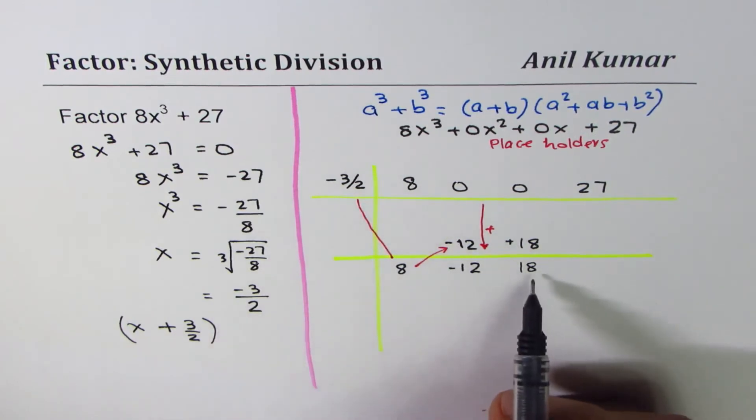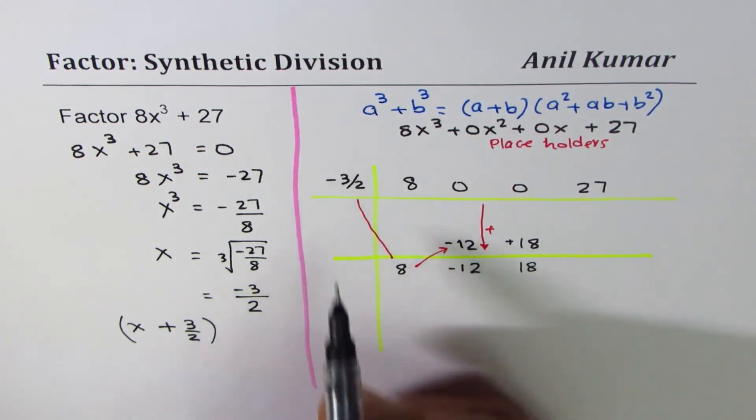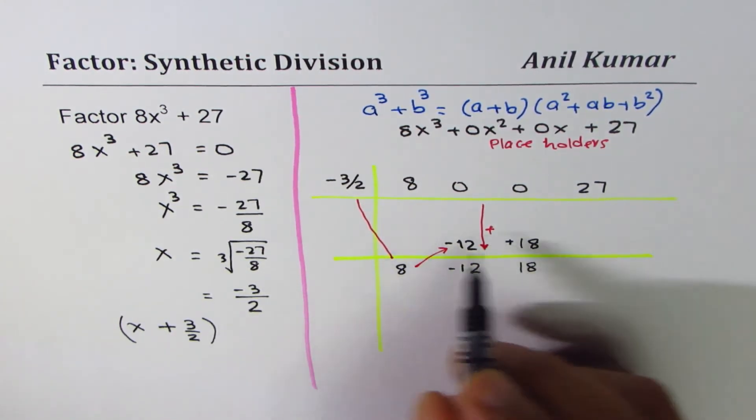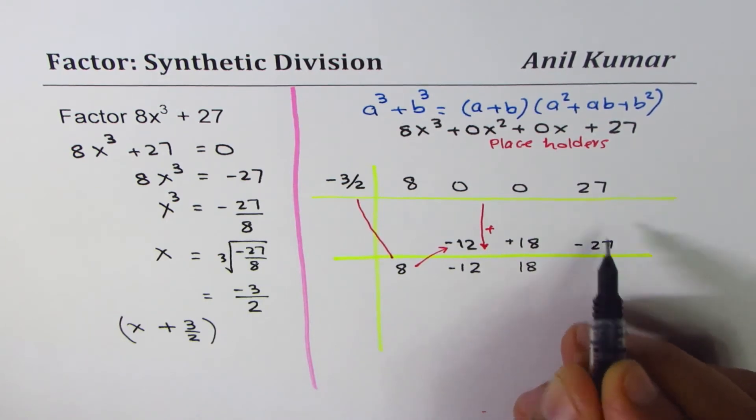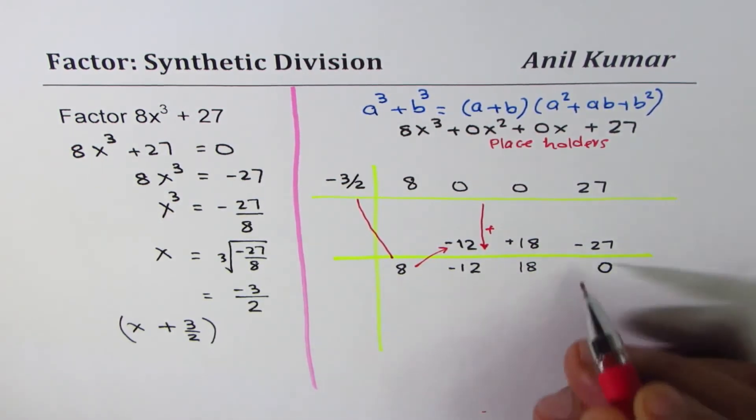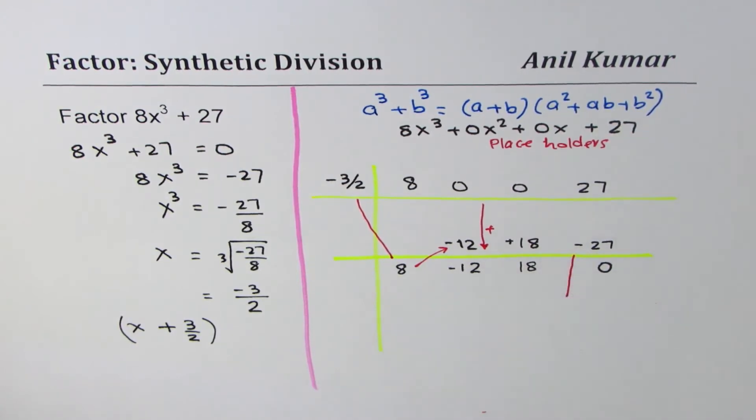When you multiply -3/2 with 18, then you get 9 times 3 which is 27 with a negative sign. And when you add, as expected, we get 0, so the remainder is indeed 0.